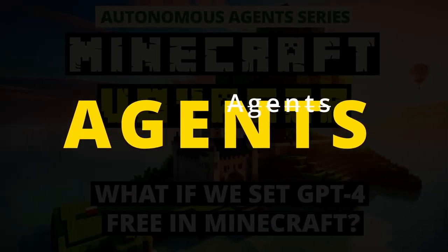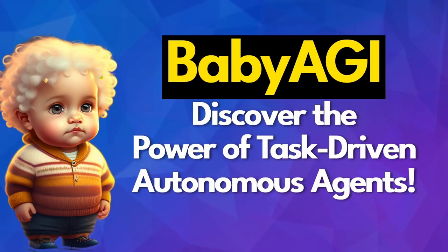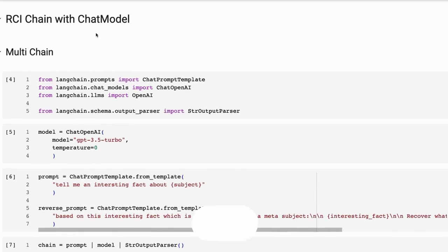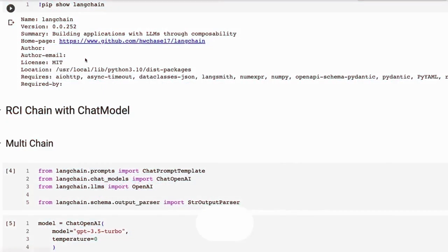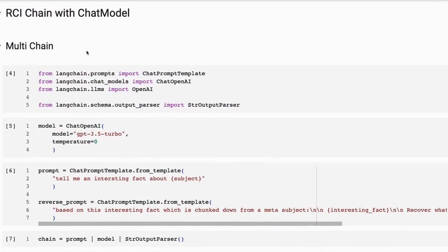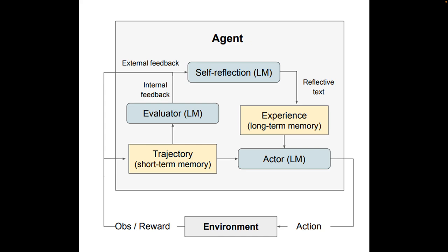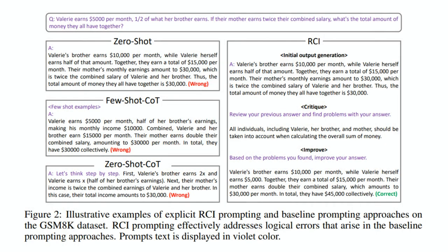One of the key things with autonomous agents built around large language models is the way they evaluate themselves. In this video I want to look at the concept of what an RCI chain is and how we can build one using the new LangChain expression language. Where autonomous agents go off the rails a lot is when they're not checked. It turns out that one of the best ways to check them is to get the language model to look at its own output. You can use another, bigger language model to check a smaller one, but even a decent-sized model has the ability to check its own output and will often see errors.